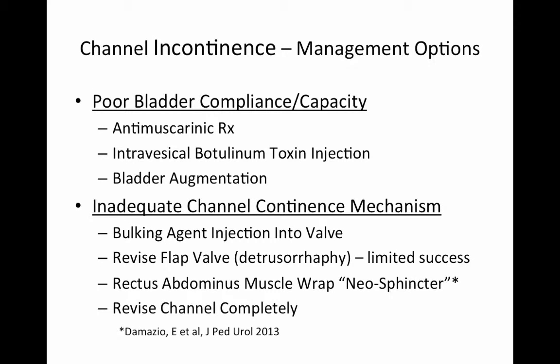Management options for poor bladder compliance or reduced bladder capacity include anti-muscarinic therapy, intravesical botulinum toxin injection, or for refractory cases, bladder augmentation. The inadequate channel continence mechanism can be dealt with through a variety of surgical means from minimally invasive to maximally invasive. Minimally invasive methods include bulking agent injection into the valve. More invasive methods include revising the flat valve through detrusorraphy, although this has limited success. More experimental methods include rectus abdominis muscle wrap around the channel creating a neosphincter, or channel revision.